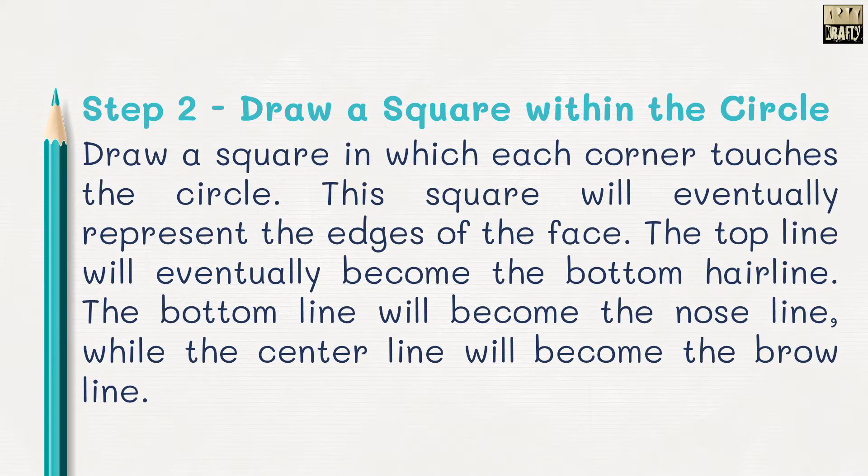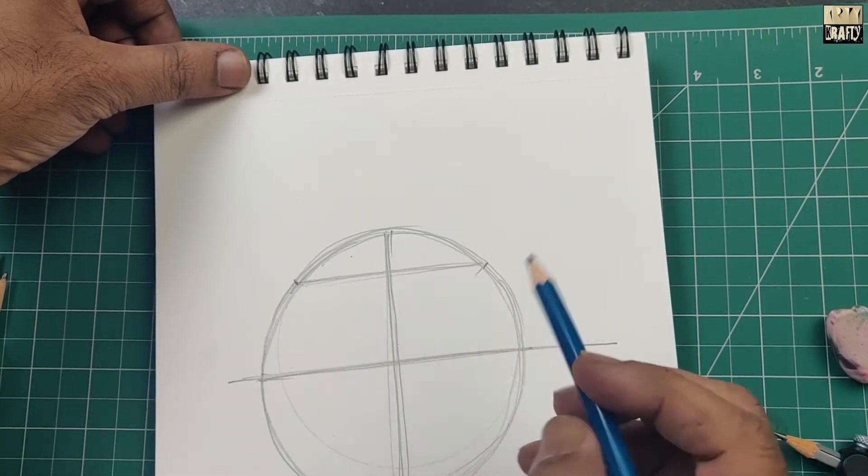Step 2. Draw a square in which each corner touches the circle. This square will eventually represent the edges of the face.